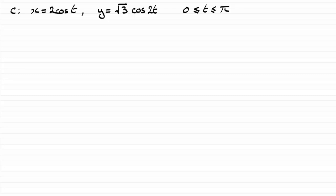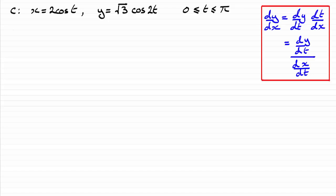For this question, we're given these parametric equations for the curve C and asked to find dy by dx. In order to do that, you're going to need to use the chain rule. As a quick reminder, dy by dx is equal to dy by dt times dt by dx, or you can think of it as dy by dt divided by dx by dt.